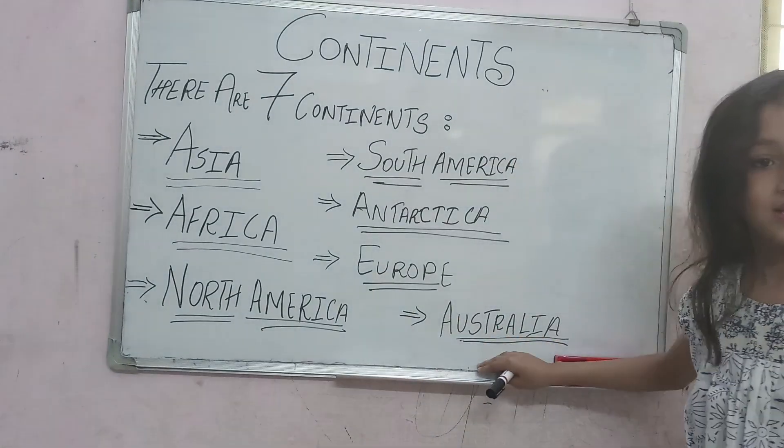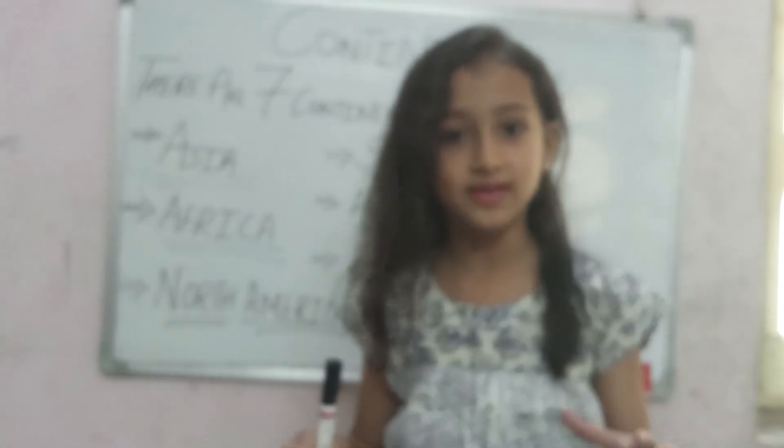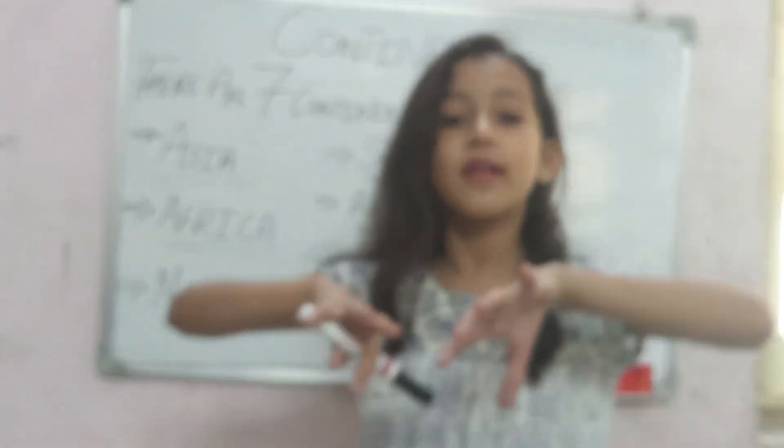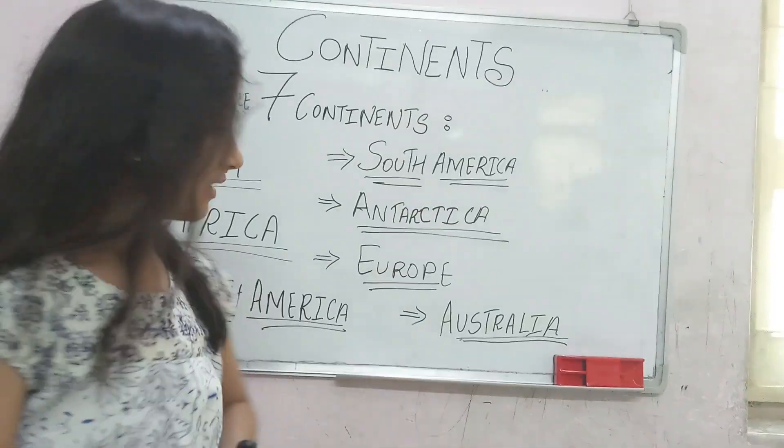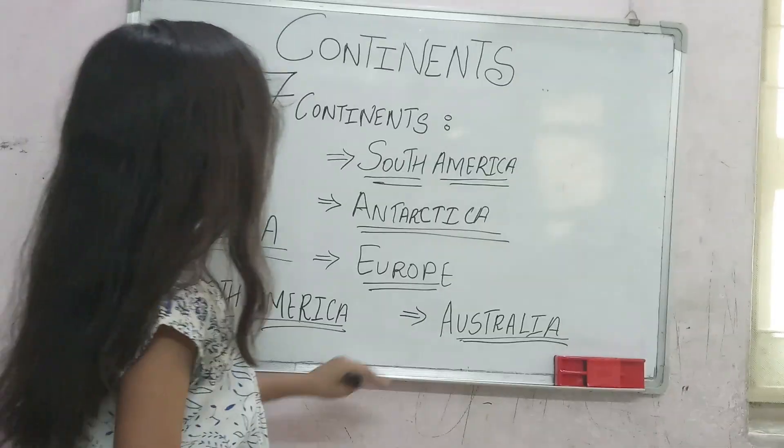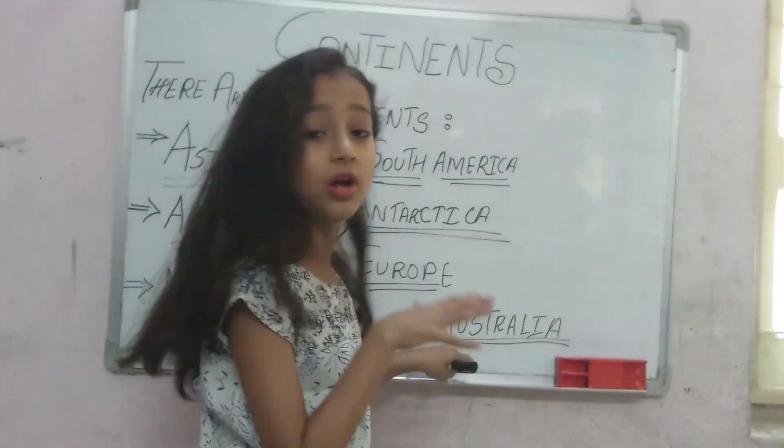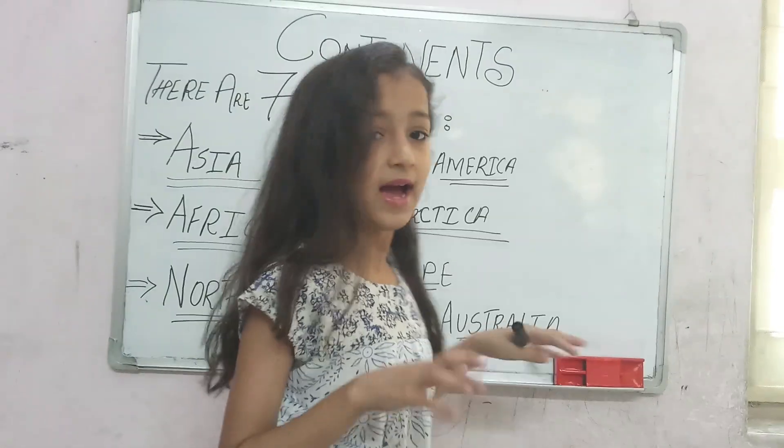Australia is the smallest continent. It is surrounded by water on all sides, so it is also known as an island.